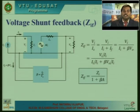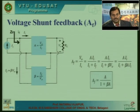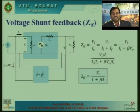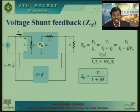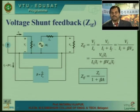Next, we determine the input impedance of the closed loop amplifier. The input impedance Z_if as seen from the source is V_i divided by i_s. Expressing i_s as i_i plus i_f, which equals i_i plus beta times V_naught, and dividing all sides by i_i, we obtain input impedance Z_if equals Z_i divided by 1 plus A times beta.